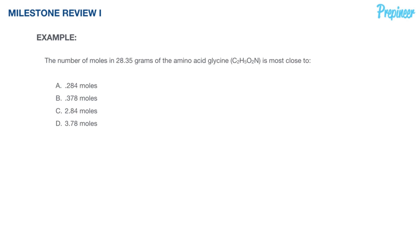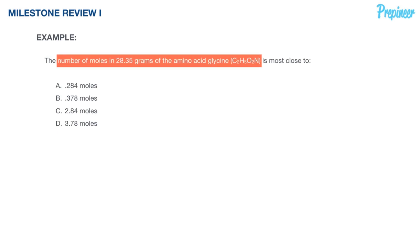This problem states: the number of moles in 28.35 grams of the amino acid glycine is most close to what? We are asked to determine the number of moles of an amino acid given its molecular formula and a sample size. We're working with moles but have to work our way back with the information given.